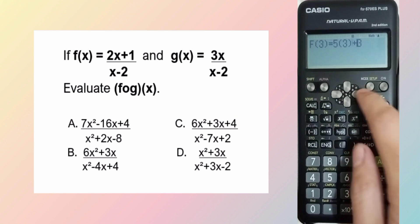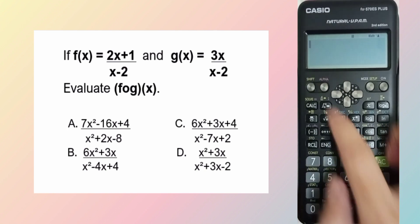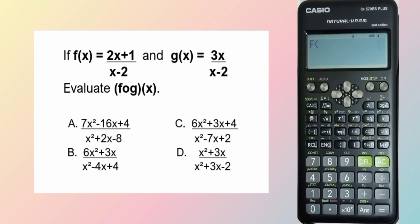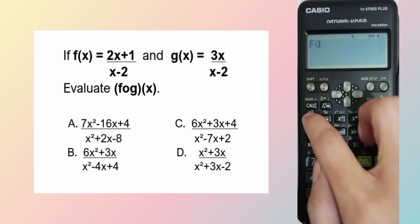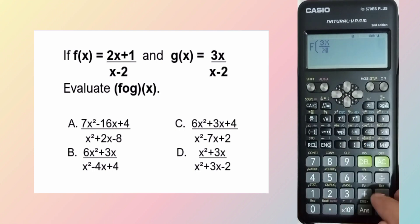Going back to the problem, we are to solve for f composed of g of x. As I mentioned earlier, f composed of g of x is equal to f of g of x. What is g of x? The given is 3x over x minus 2. So automatically, we know that this 3x over x minus 2 is what we'll substitute for x in f of x. Clear now? Okay. Let's do it.